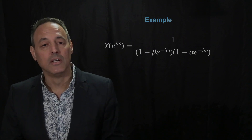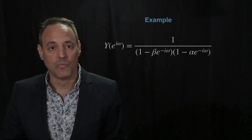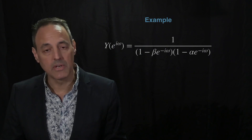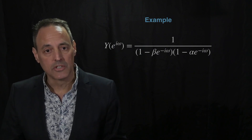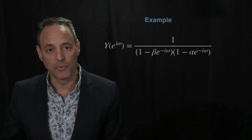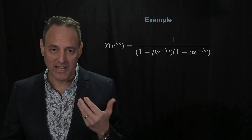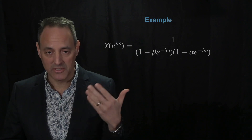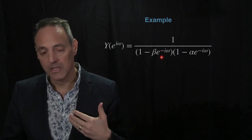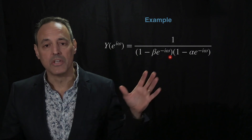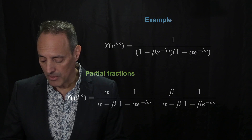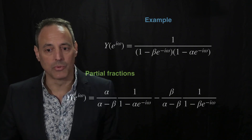This is what the Fourier transform of y looks like, and now we want to invert it. Computationally it's very easy to invert, but if you want to invert it analytically, you want to fit this into a form that matches something on the discrete Fourier transform tables. To do that, we're going to rely on partial fractions to split this apart.